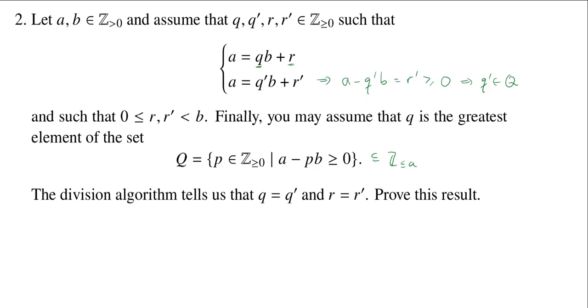So this implies that Q prime is an element of big Q. But little q is the greatest element of the set big Q, and so this implies that Q prime is less than or equal to Q.